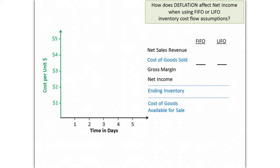By the end of this video, I hope you'll be able to explain the answer to the following question: How does deflation affect net income when using FIFO or LIFO inventory cost flow assumptions?